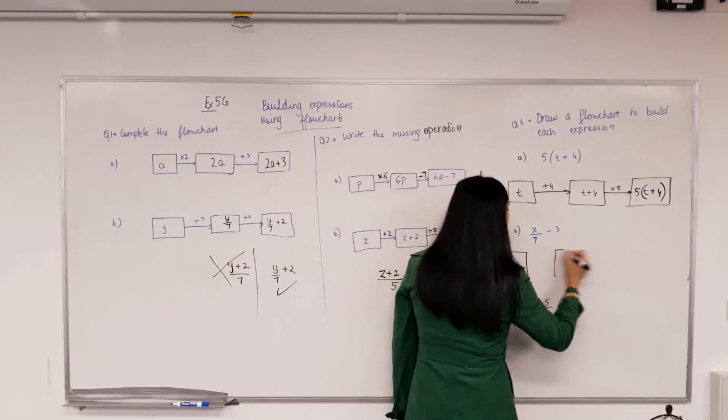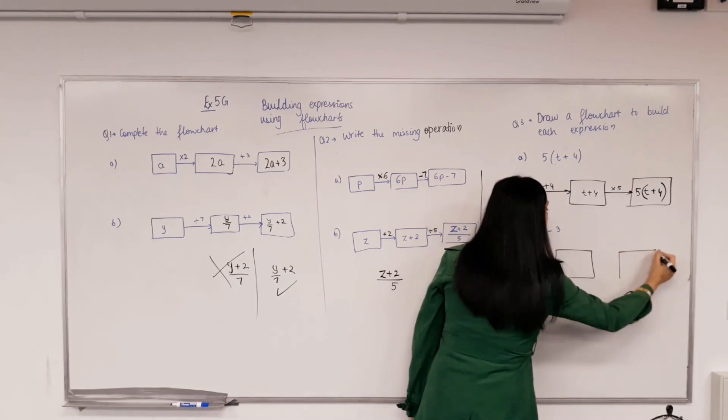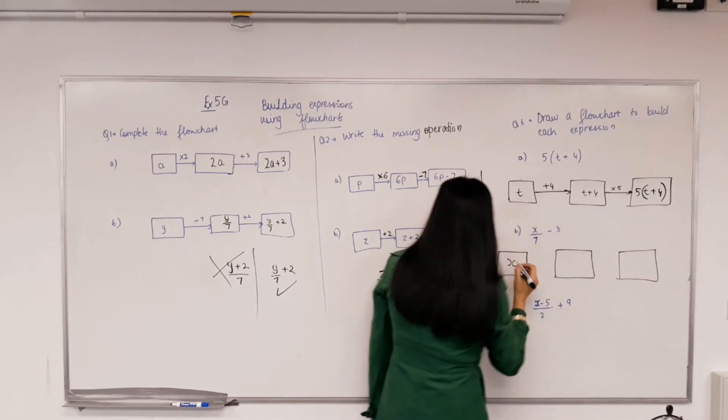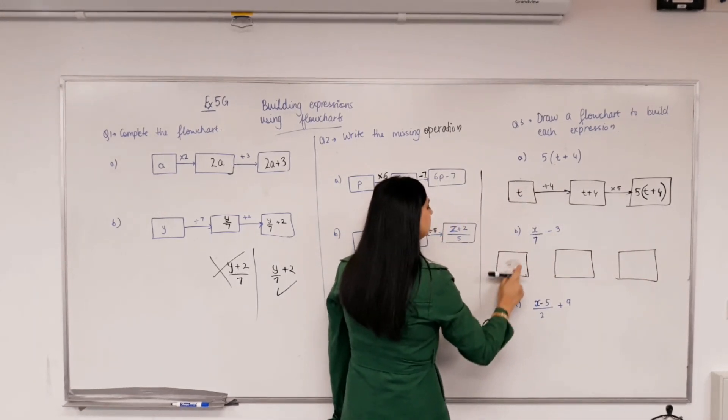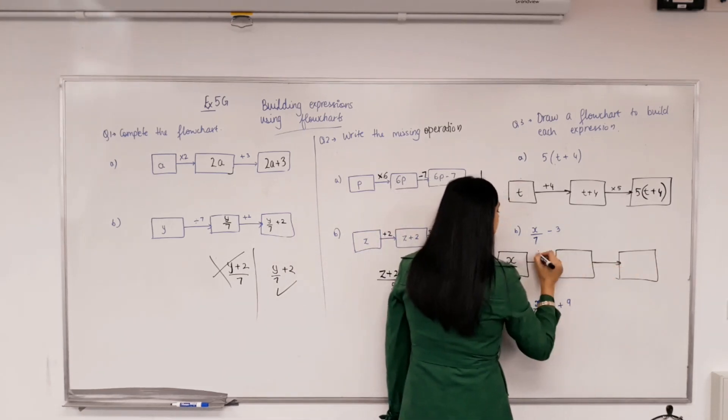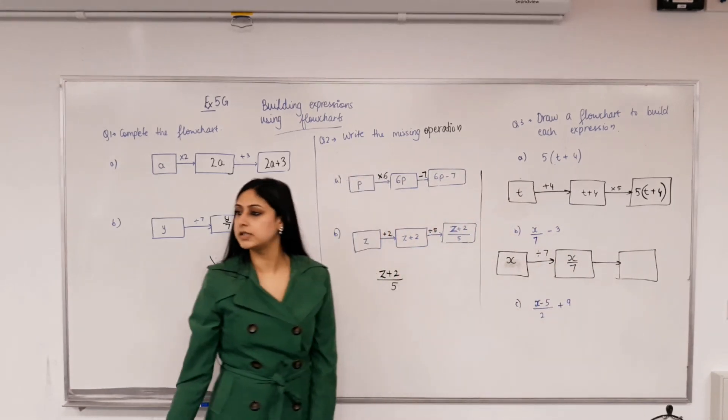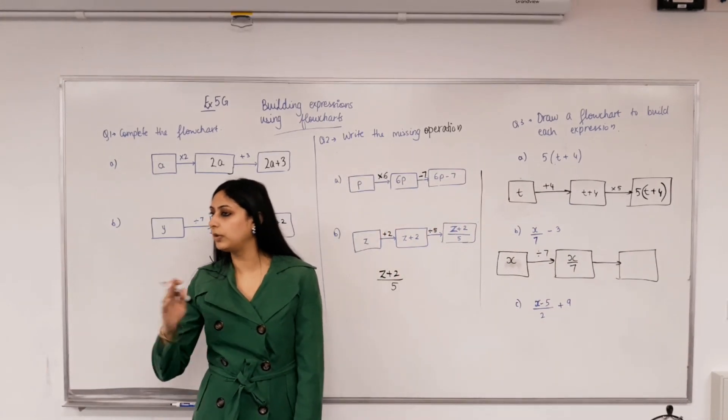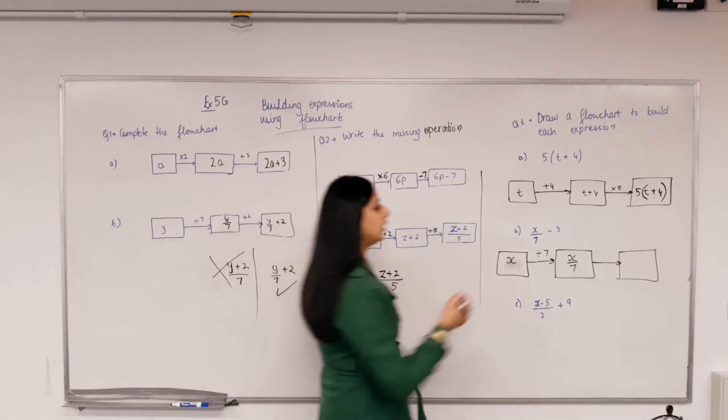Next one. So what's the pronumeral that we started with? X. Now what have I done to x first, divide by 7 or take away 3? Divide by 7. Will it look like this if I divide by 7? Yes, because 3 is not divided by 7, so 3 must come after that. And then what's left? Subtract 3. That's it, make sense? Perfect.